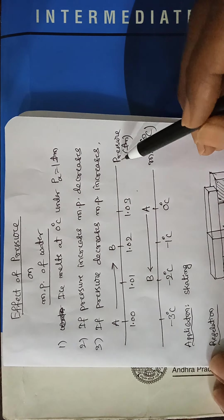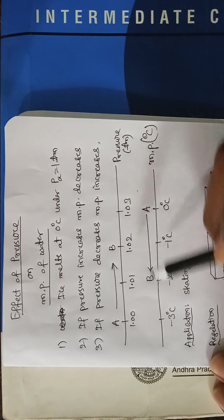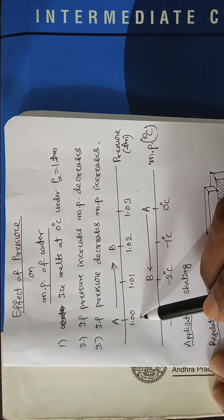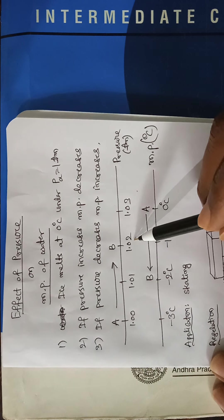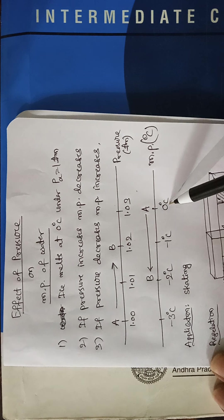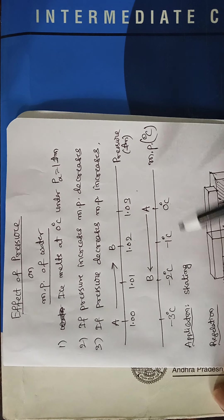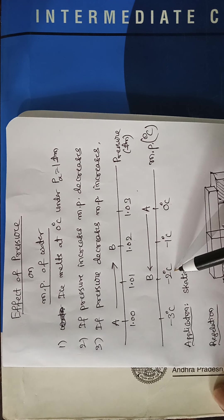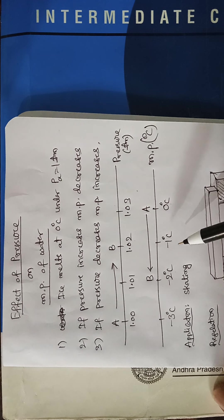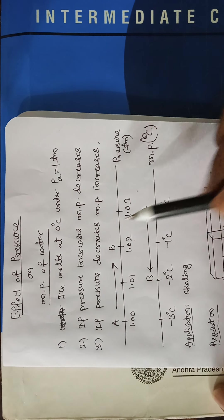On the pressure scale, suppose pressure is increased from 1 atmosphere to 1.02 atmospheres — then its melting point changes from 0 degrees to minus 2 degrees centigrade. In this way, the melting point is lowered when pressure is increased.